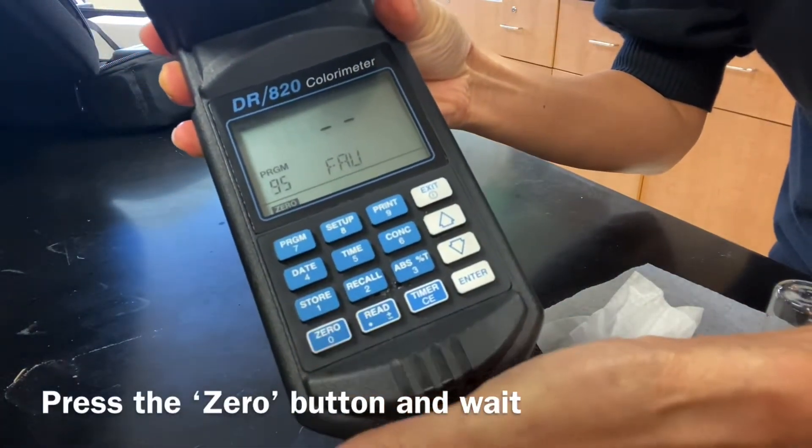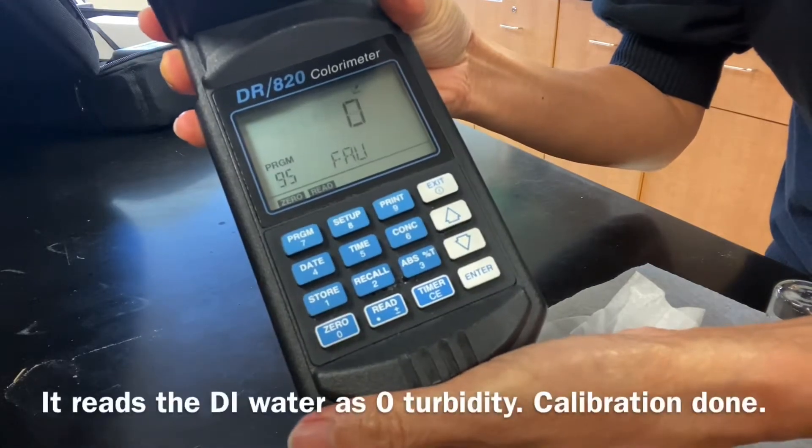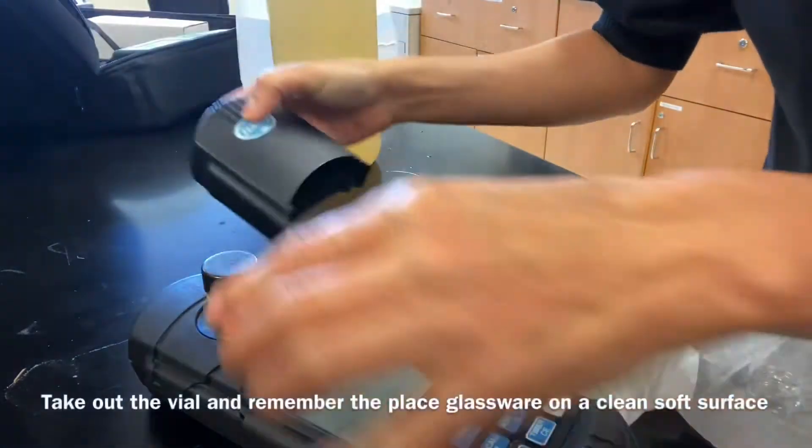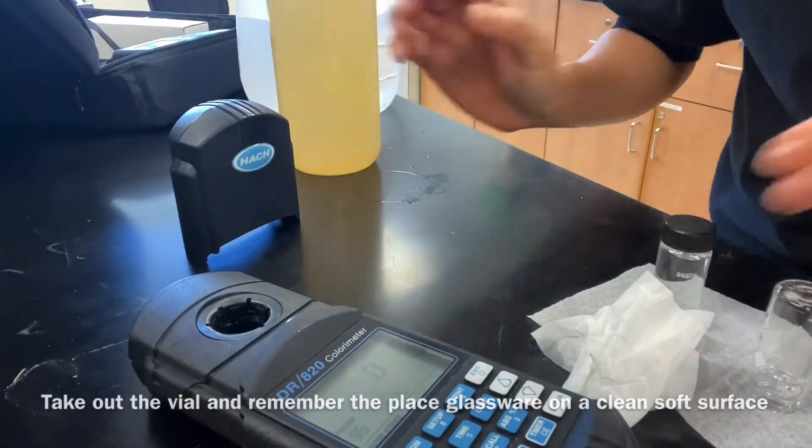According to the U.S. EPA, turbidity is limited up to 1 FAU or 1 NTU for drinking water.